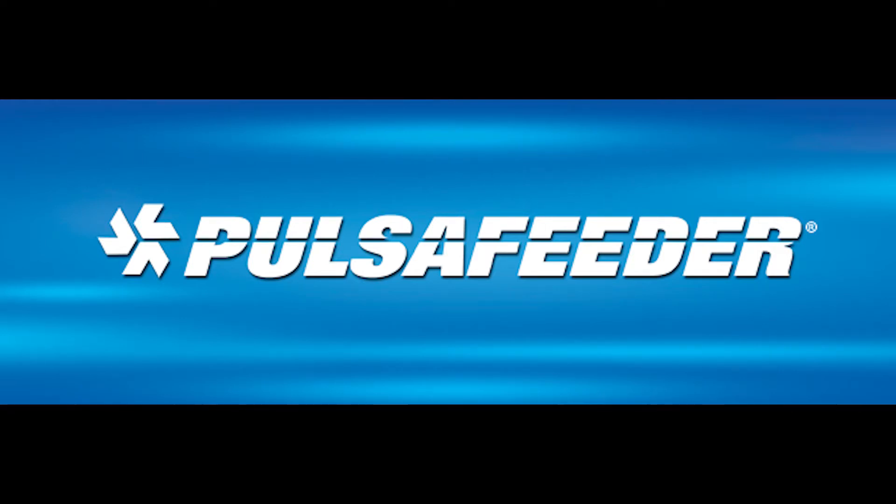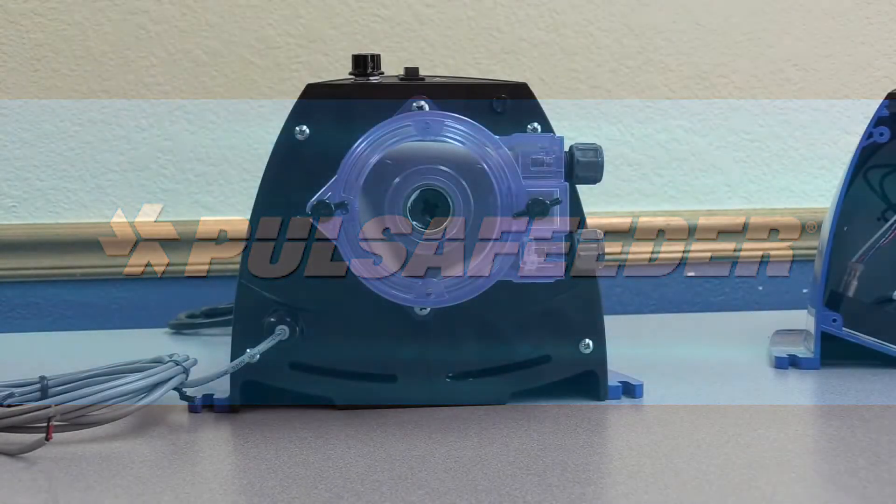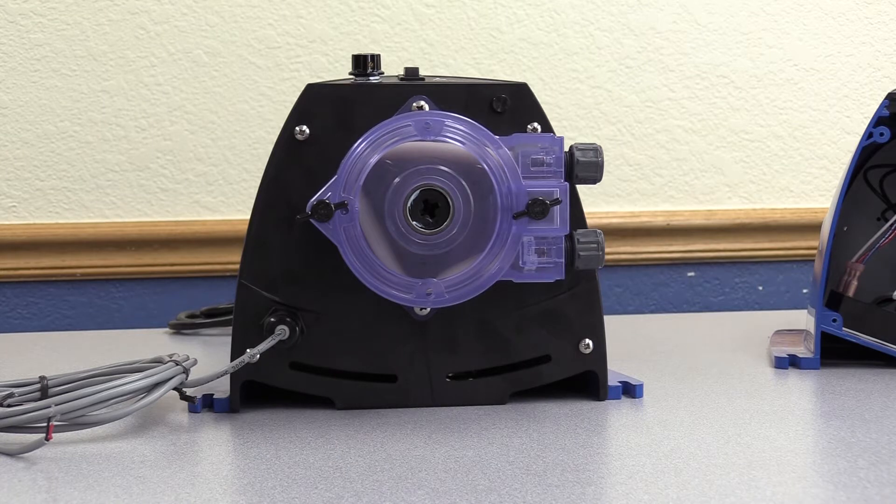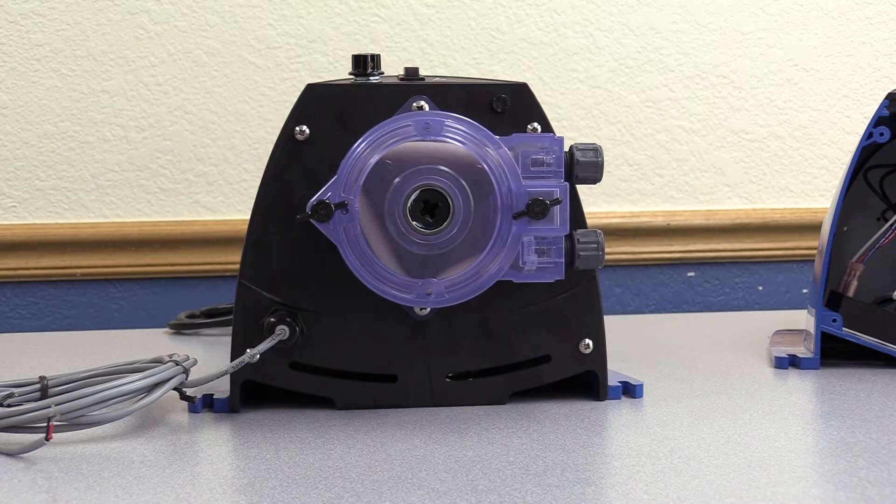This video will show you how to change the timer module on a Pulsifeder Chemtech XP series pump. If the 7th character in the model number is a 6 or 8, your Chemtech XP pump does not have a timer module. This does not affect the XPV series.